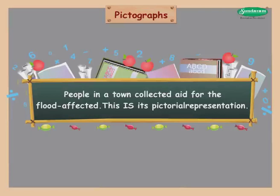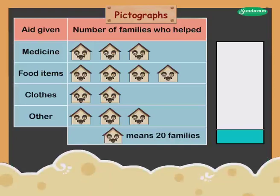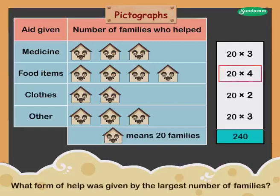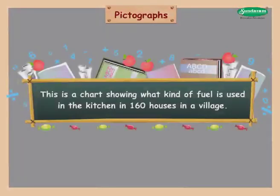Let us solve the following exercise. Study the tables and answer the questions. People in a town collected aid for flood-affected people. Scale: one house means 20 families. In all, 12 × 20 = 240 families gave help. The largest number of families gave aid in the form of food items. The least number of families gave aid in the form of clothes.